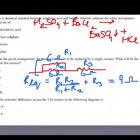Now see question number four: The potential difference across the 3 ohm resistor in the following diagram is. So firstly draw the diagram.